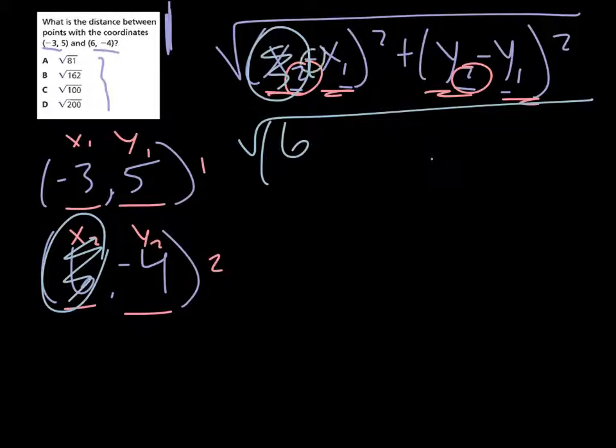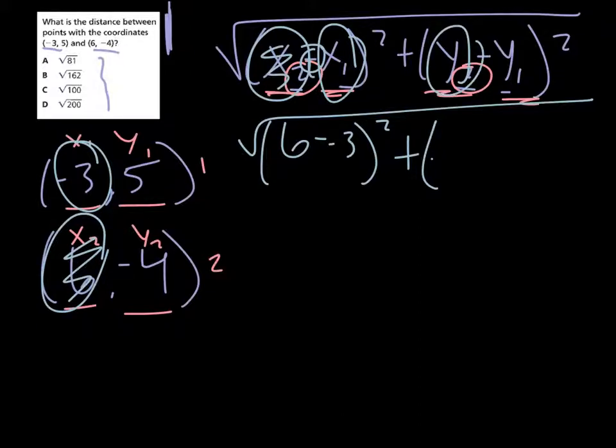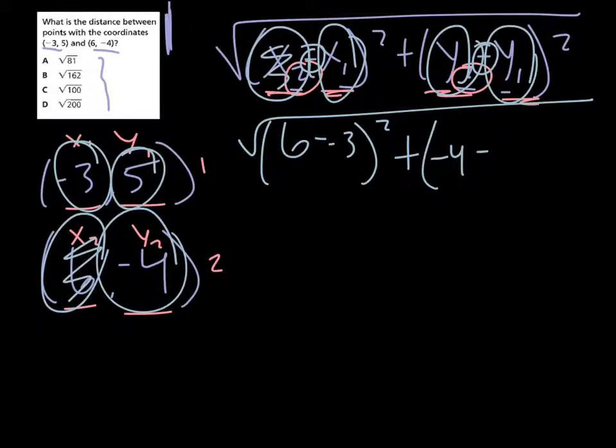Squared, plus parentheses. Our y, our y₂, which is this little fella, minus sign, and our y₁, which is this little fella. And then squared.